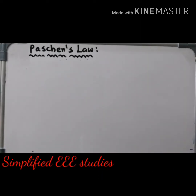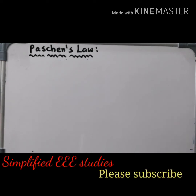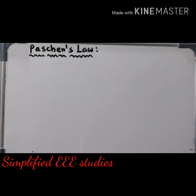Hello everyone, welcome to my YouTube channel. In the last session I gave a brief idea about Paschen's law. As everybody knows, according to Paschen's law, voltage is a function of the product of pressure and distance. Now I have to derive the formula and verify that voltage is a function of the product of pressure and distance.